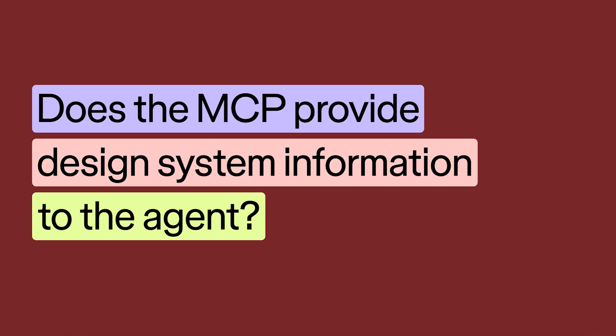Next question: I have a design system set in Figma where I define variables, colors, fonts, etc. Does the MCP also provide that information to the agent so it can create the equivalent values in code? Yes, that's exactly what we were doing in our live stream — every selection we had gave the agent access to the component data and the underlying variables. So if you're using a screen that already takes into account components, that information will come through. You can also use this to flesh out and build your design system — taking variable definitions, color definitions, even building out components.